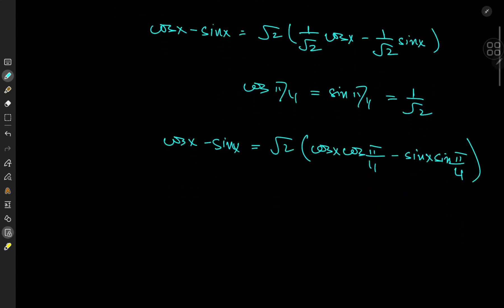And we know from elementary trigonometry that this thing should be equal to the cosine of the sum of the two angles, so that's x and pi over 4.